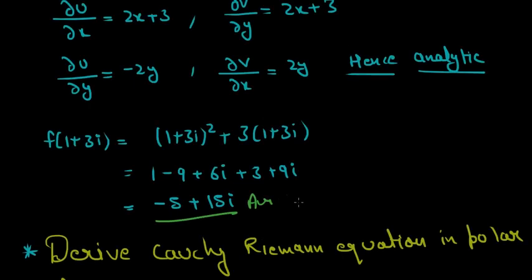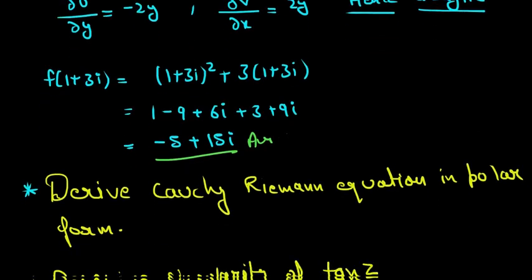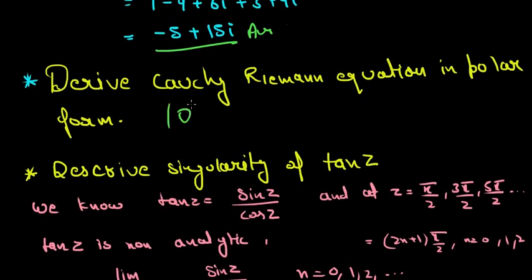The other question, a 10 marks question, was to find the Cauchy-Riemann equation in polar form. This is a theory question and I have done it in the theory part, so I won't solve it here.